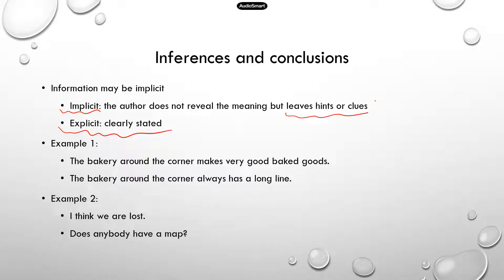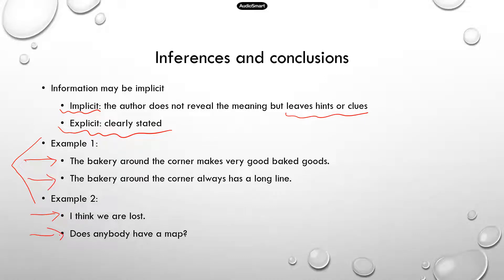I have two short examples below. The first version is explicit, which is clearly stated, and then the second version is implicit. For example, the first explicit version: "The bakery around the corner makes a very good baked good." This is pretty clear — the bakery has very good baked stuff.